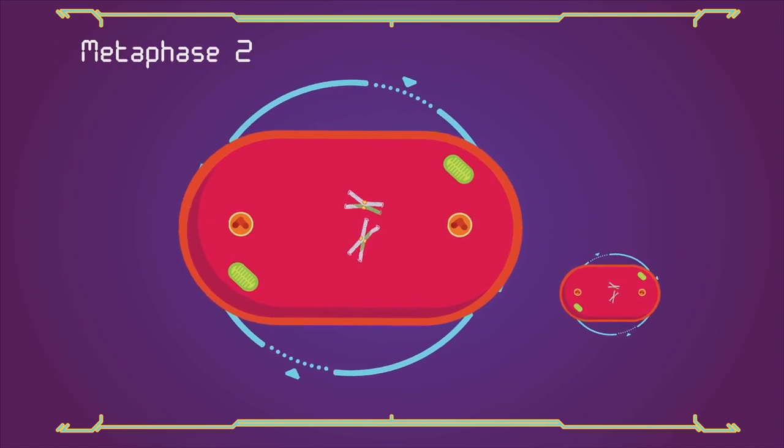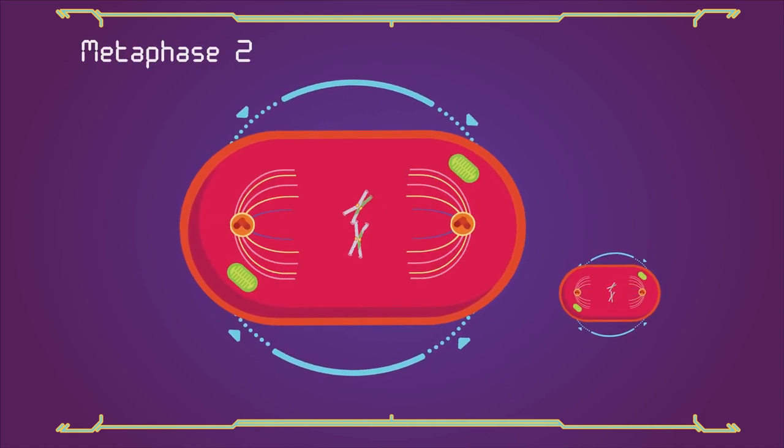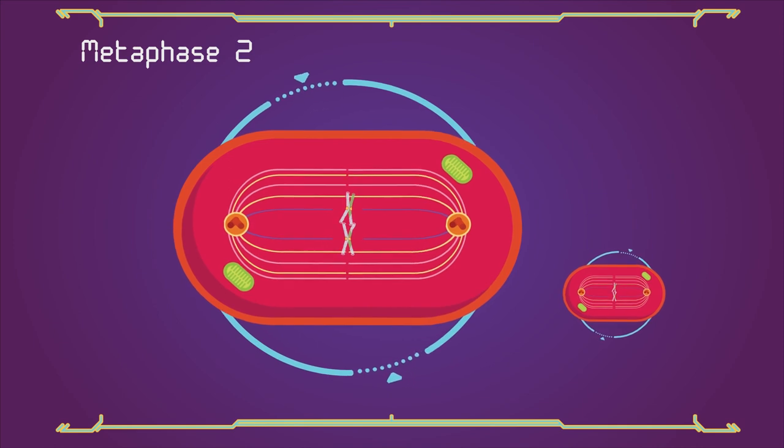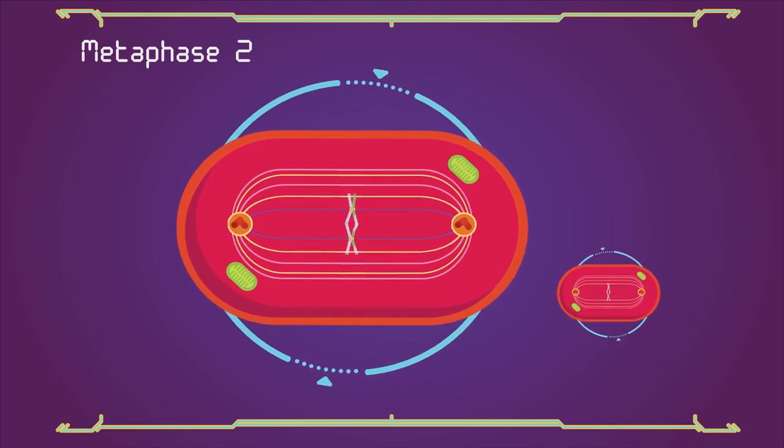In metaphase 2, the centromeres contain two kinetochores that attach to spindle fibers from the centrosomes at opposite poles.